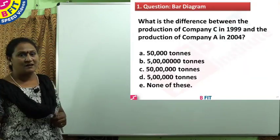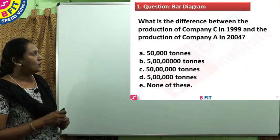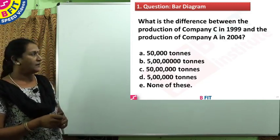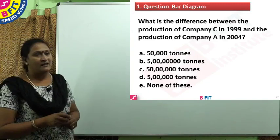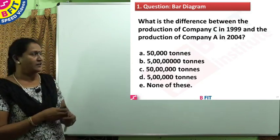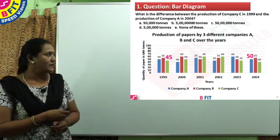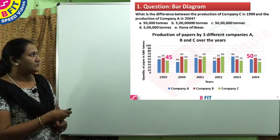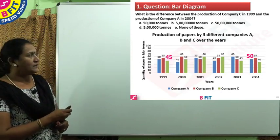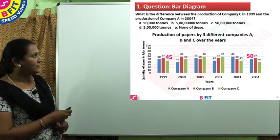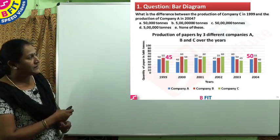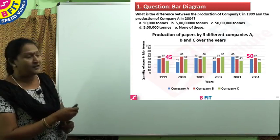Question number 1: What is the difference between the production of Company C in the year 1999 and the production of Company A in 2004? We will see the working. The data is highlighted on the working slide.